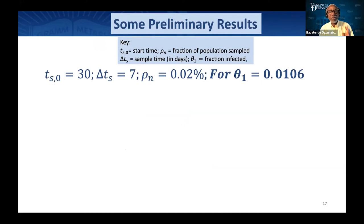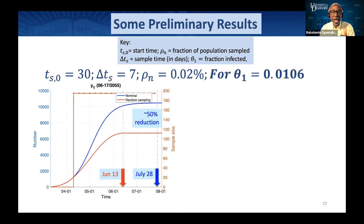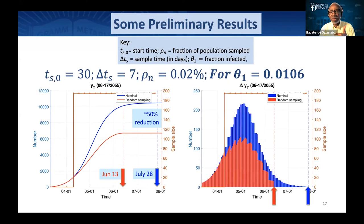If we had sampled every week and took 0.02% of the population of the state of Delaware — that is the number of people that we sample and test — and for an initial fraction of infected people of 0.01, here's what we would have seen. We could have shortened — this is not flattening the curve, this is changing the curve completely. We would have brought things back by about 15 days and achieved about a 50% reduction if we had done this 30 days in. We're saying the next time something happens, we will know what to do and how to do it. The right curve is what we would have seen instead of the blue curve.